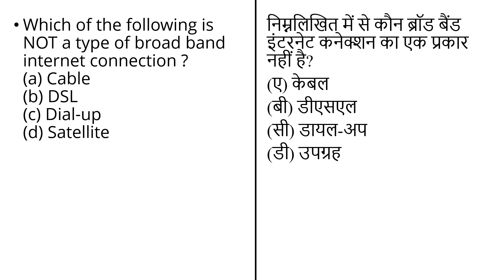The next question is: which of the following is NOT a type of broadband internet connection? The options are: cable, DSL, dial-up, and satellite. Dial-up is not a type of broadband internet connection. Broadband is commonly referred to as high-speed internet access. It is always-on and faster than traditional dial-up access.